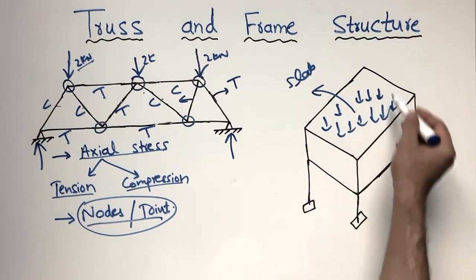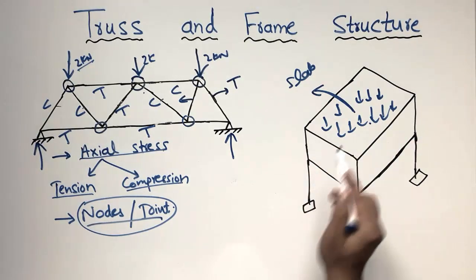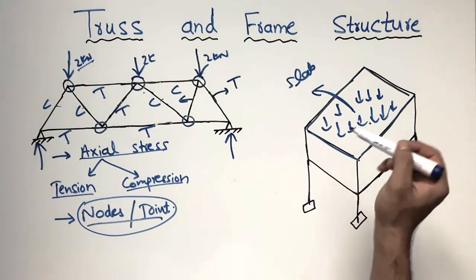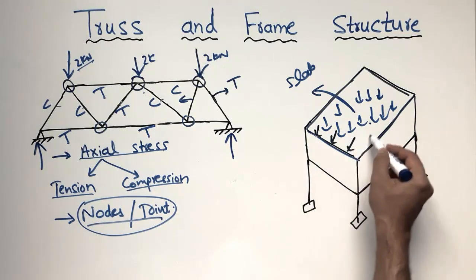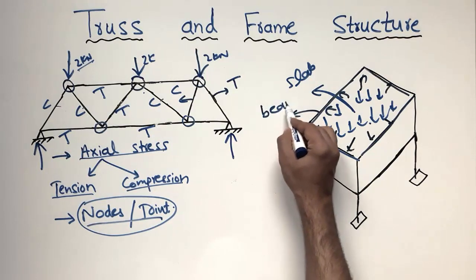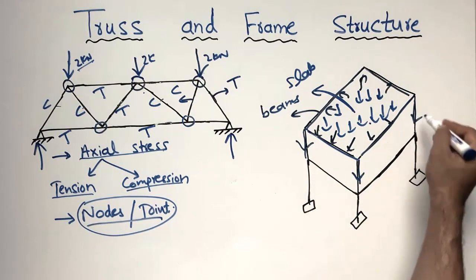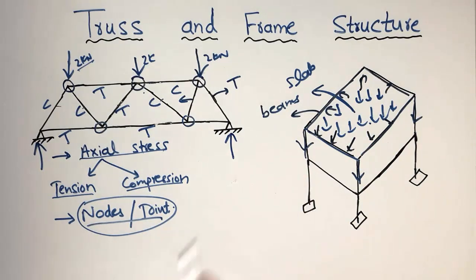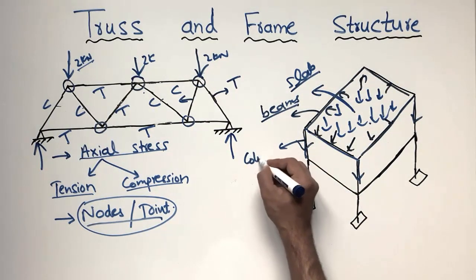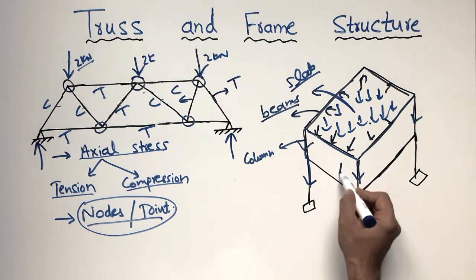Let's suppose this is a load being placed on the frame structure. The slab is a 2D member mainly subjected to flexure stresses. After the slab, you have beams at the sides and corners of the structure, and these beams take the load from the slab. The load is then transferred to the beams. After the beams, the load is transferred to the columns, which are vertical and compressive members taking only compressive load. The beam takes shear and flexure load, the slab takes flexure load, and the columns take compressive load.